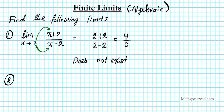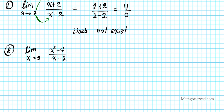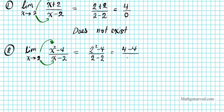Let's find the limit as x approaches 2 of x squared minus 4 over x minus 2. So let's just plug in first and see if we are successful. I plug in 2 into this x and plug in 2 into that x, so I'm going to have 2 squared minus 4 over 2 minus 2. In the numerator, 2 squared is 4, so 4 minus 4 over 2 minus 2. And 2 minus 2 is 0, so we have a 0 in the denominator — that's a problem. This is going to be undefined.